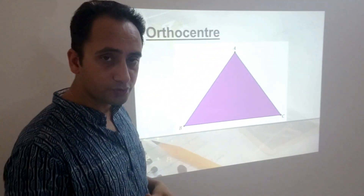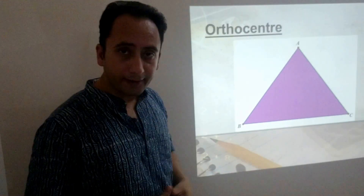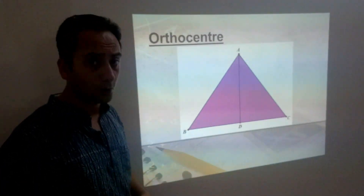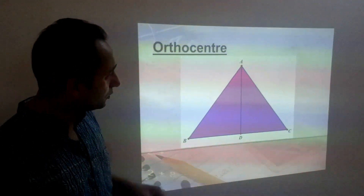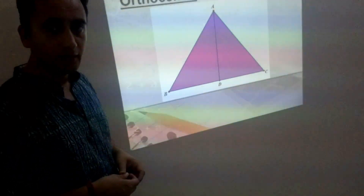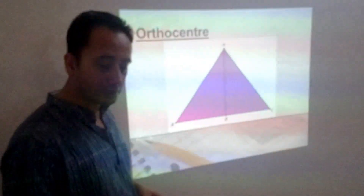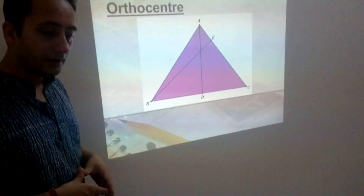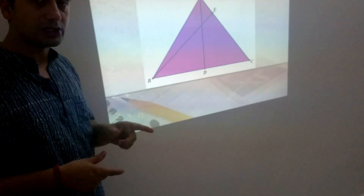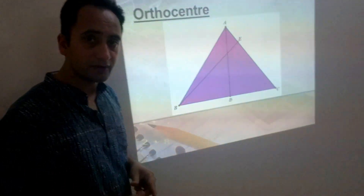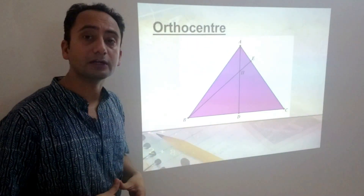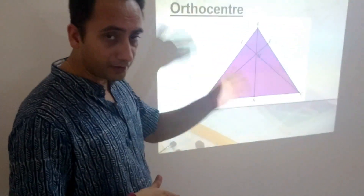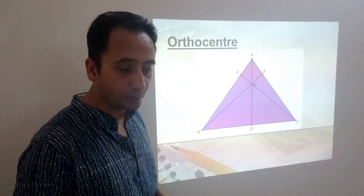Let's come to the next center, that is Orthocenter. Again, we have a triangle ABC. In this triangle, let's draw an altitude. What is an altitude? Altitude is a perpendicular drawn from a vertex to the opposite side. The foot of the altitude is point D. Now let's draw another altitude to side AC from vertex B. These two altitudes intersect each other at a specific point, represented by H, and H is known as the orthocenter of a triangle. Even if I draw the third altitude, it will again intersect at point H.